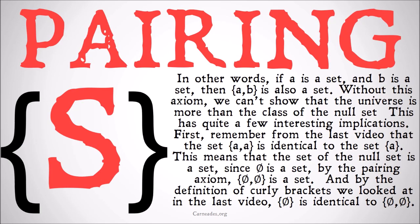In other words, if A is a set and B is a set, then the set of A and B is a set. Without this axiom, we can't show that the universe is more than just the class of the null set. This has quite a few interesting implications that we're going to look at in this video and the next couple of videos.